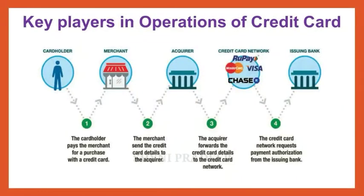The key players in credit card operations are: the cardholder, the merchant, the acquirer, the credit card network, and the issuing bank. The cardholder pays the merchant with a credit card; the merchant sends the credit card details to the acquirer; the acquirer forwards those details to the credit card network; and the credit card network requests payment authorization from the issuing bank.